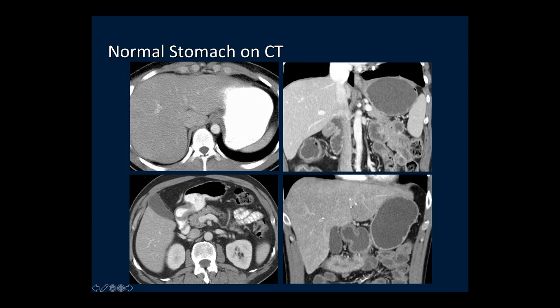Neutral contrast material is preferred because we can clearly see the normal enhancing gastric wall with neutral contrast in the gastric lumen. With positive contrast in the fully distended stomach, the gastric wall becomes imperceptible because it enhances similarly to the positive contrast material in the lumen. The normal thickness of the gastric wall ranges from 5 to 10 mm depending upon the location, with the thickest portion being the gastric antrum, which can go up to 10 mm.